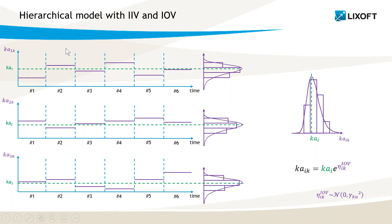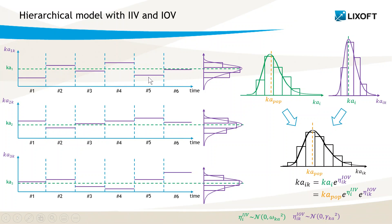So for subject 1, an individual value Ka1 is drawn from the inter-individual distribution, and then for each occasion including the first one, an additional inter-occasion variability is drawn such that the true Ka deviates a little bit from Ka1. The distribution of the parameters across all occasions of all subjects is then a combination of the random effect for inter-individual variability (IIV) and the random effect for inter-occasion variability (IOV).